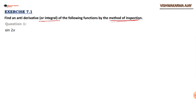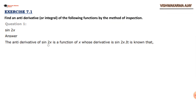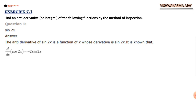Question number 1: sine 2x. The antiderivative of sine 2x is a function of x whose derivative is sine 2x. It is known that d/dx of cos 2x is equal to minus 2 sine 2x, since the derivative of cos x is minus sine x. That's why the derivative of cos 2x is equal to minus sine 2x times the derivative of 2x, giving us the factor of 2, so we have minus 2 sine 2x.